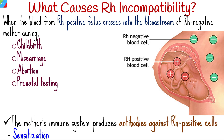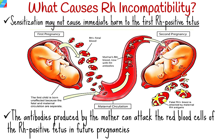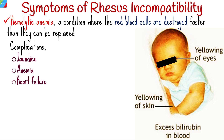This immune response is known as sensitization. While sensitization may not cause immediate harm to the first Rh positive fetus, it can have severe consequences in subsequent pregnancies with Rh positive fetuses. The antibodies produced by the mother can cross the placenta and attack the red blood cells of the Rh positive fetus in future pregnancies. This can lead to hemolytic anemia, a condition where red blood cells are destroyed faster than they can be replaced, resulting in severe complications including jaundice, anemia, and in extreme cases, heart failure, brain damage, or even death.